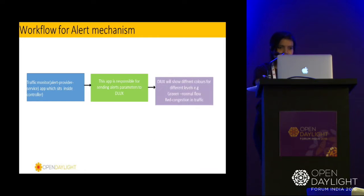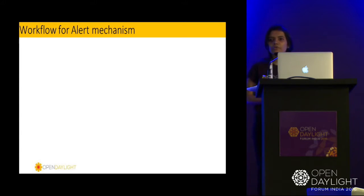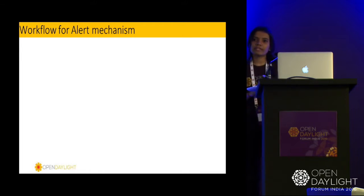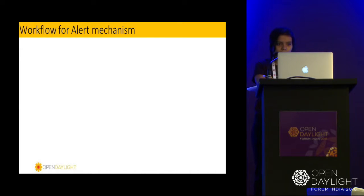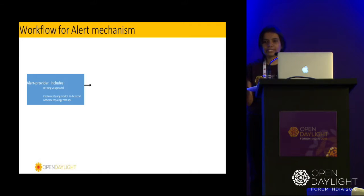Now we'll see this implementation in detail. In the first step, we have to write an application inside the OpenDaylight controller. We can use the MDSAL architecture — we can write the YANG model and use the existing API. In my use case, I'm using the network topology API for adding the alert info. In the second step, the API gets ready, so I have the API which has alert information, and I will monitor that API.